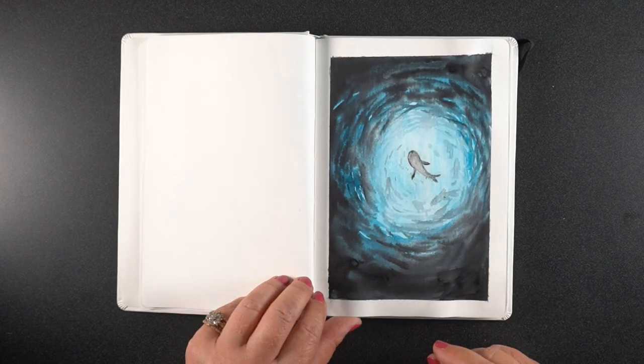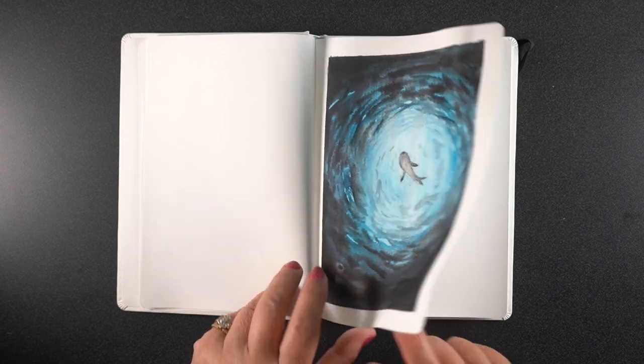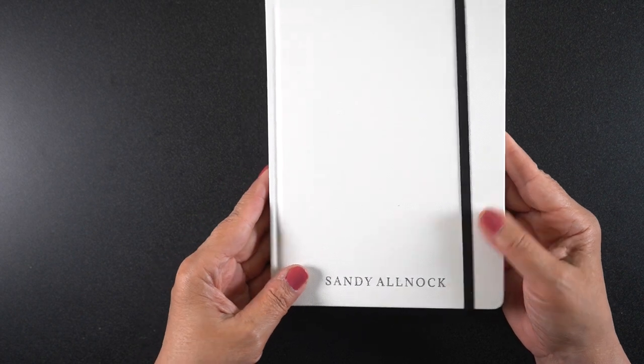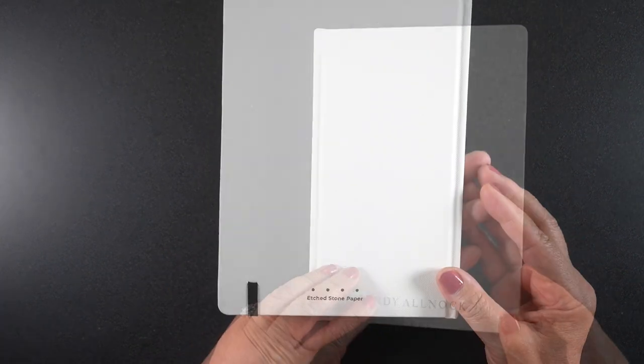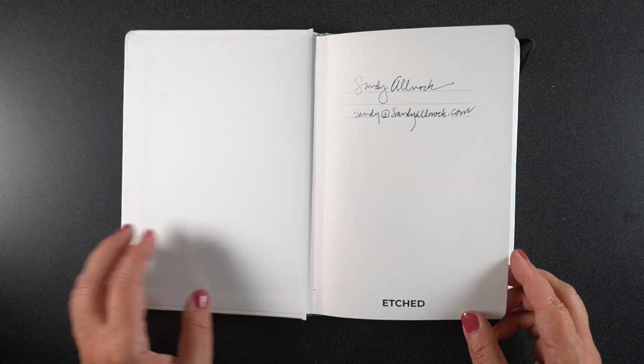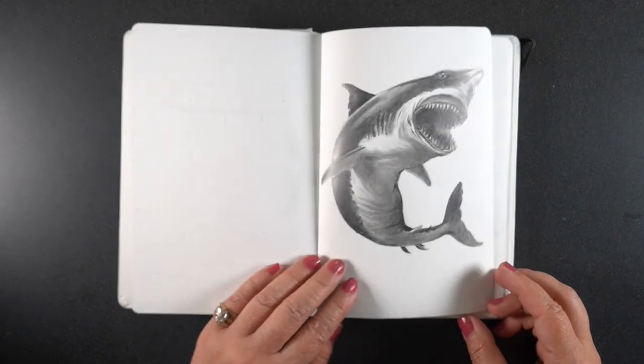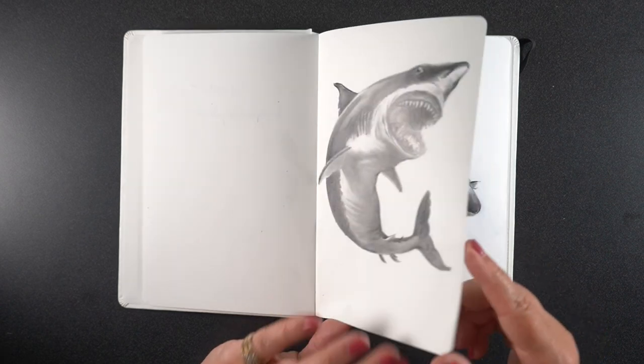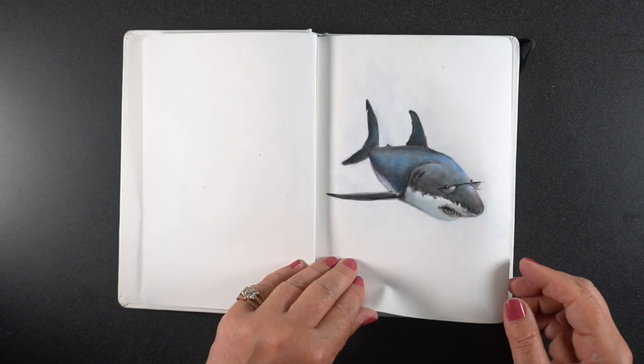My overall assessment of this Etched stone sketchbook is first that Etched is on their game they sent me a sketchbook that had my name on it like who does that that was kind of nice but that did not affect my assessment of the paper which works really great with graphite works really great with alcohol ink and pen and ink I'm going to use it for those a lot.